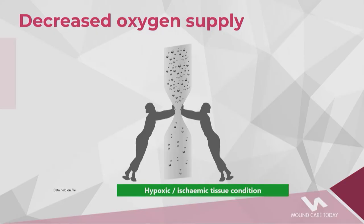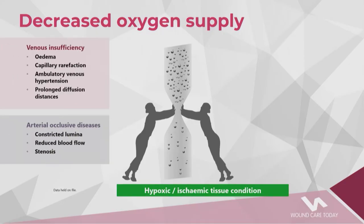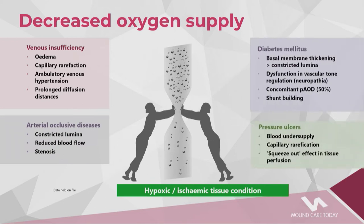We don't really think about oxygen, but in chronic wounds there's often a reduced supply and usually an increased demand. As you can see on this slide, different wound types have a decreased oxygen supply. With venous insufficiency, swollen legs reduce flow to wounds. Arterial occlusive disease narrows vessels, reducing flow. With diabetes, thickened basal membranes in vessel walls limit transfer of nutrients from vessels into tissues to aid healing.